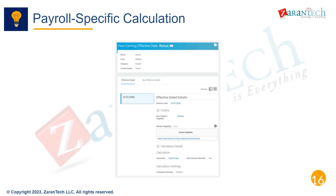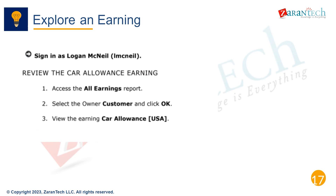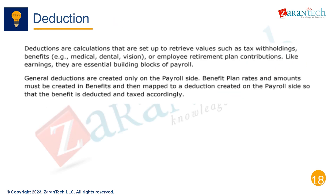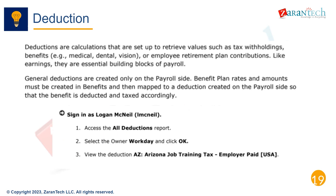In addition to those general calculation types, there are some calculations specific to payroll. These include earnings, deductions, and pay balances. Earnings calculations determine the amount that will be paid to an employee — this could be regular pay, overtime, bonuses, commissions, and more. Built-in methods like wage basis, hours worked, and proration simplify earnings configuration.